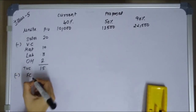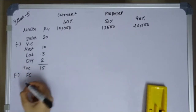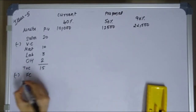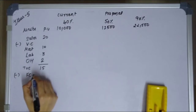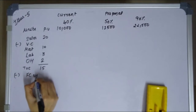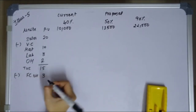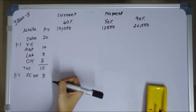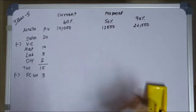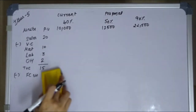Now for fixed cost: overheads are 5 rupees, and 60% is fixed. So fixed overhead per unit is 3 rupees. This fixed cost remains constant regardless of capacity level.